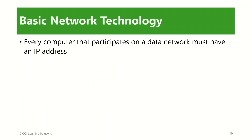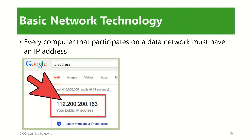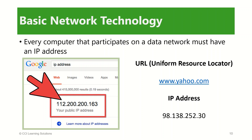In order for the computers connected to a network to communicate with one another, each computer requires a unique address. This address is called an Internet Protocol address, or IP address. Each computer on the local network and each computer on the internet has an IP address that distinguishes it from all other computers on the network. On the internet, each website has its own IP address which is associated with an easy-to-remember text address called a URL, or Uniform Resource Locator. For example, the URL yahoo.com is associated with the IP address 98.138.252.30.